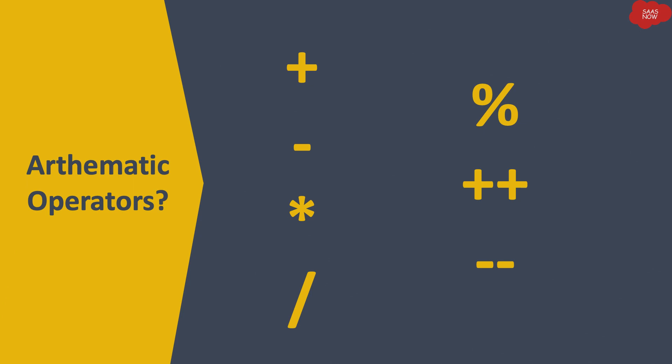We will start with arithmetic operators. Arithmetic operators are used to perform arithmetic on numbers. Starting with plus — it is called addition, which is used to calculate the sum of two numbers. Then we have minus — it is called subtraction, which is used to calculate the subtraction of two numbers. Then we have asterisk, which is called multiply.